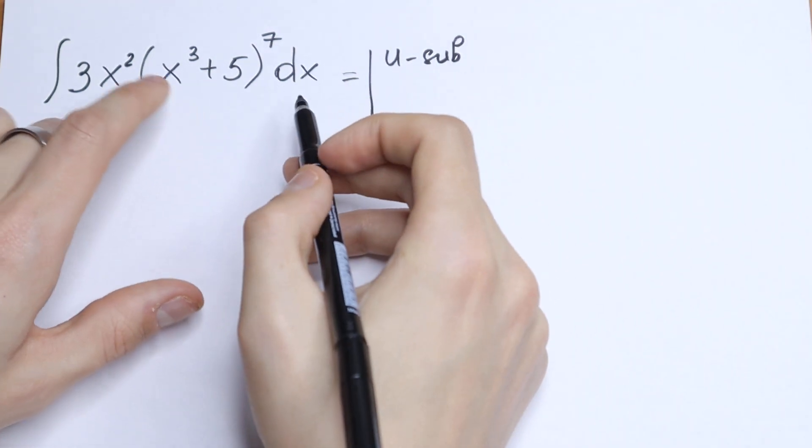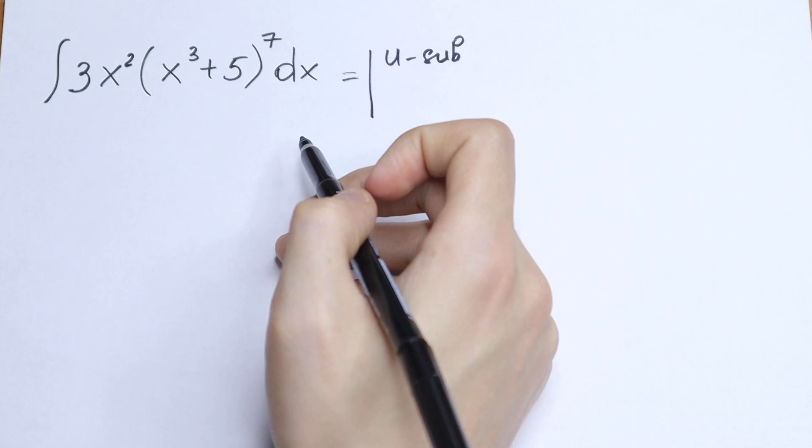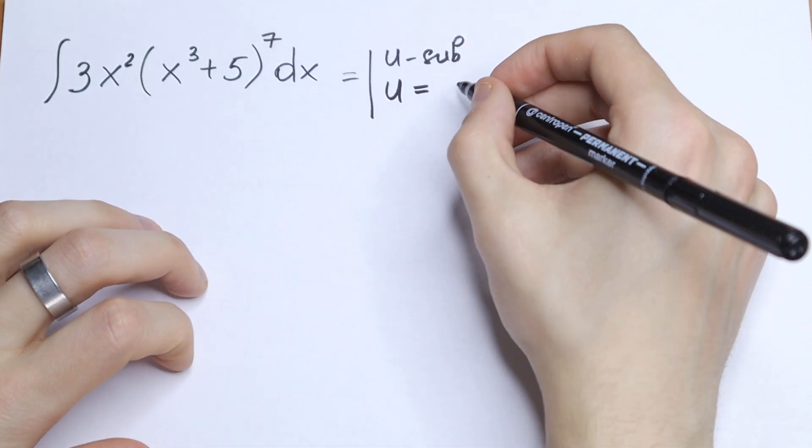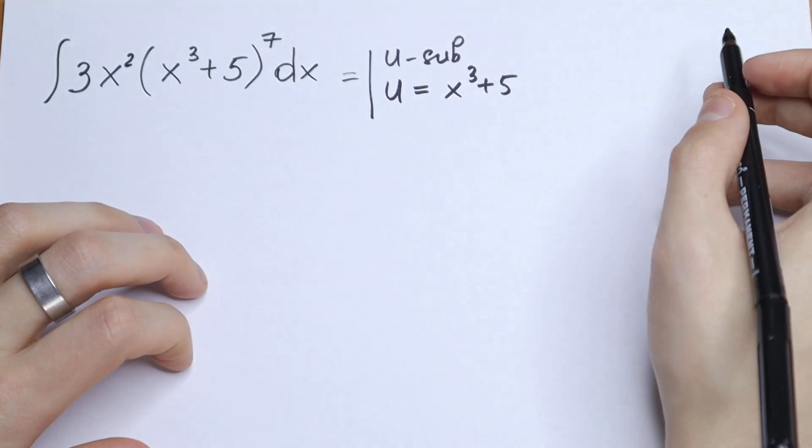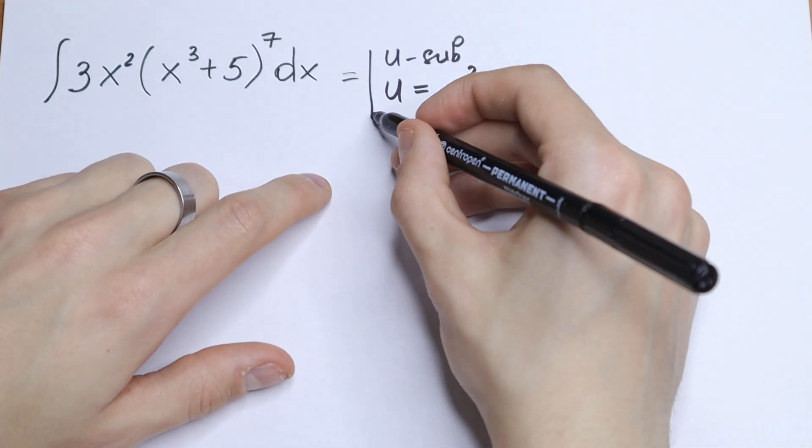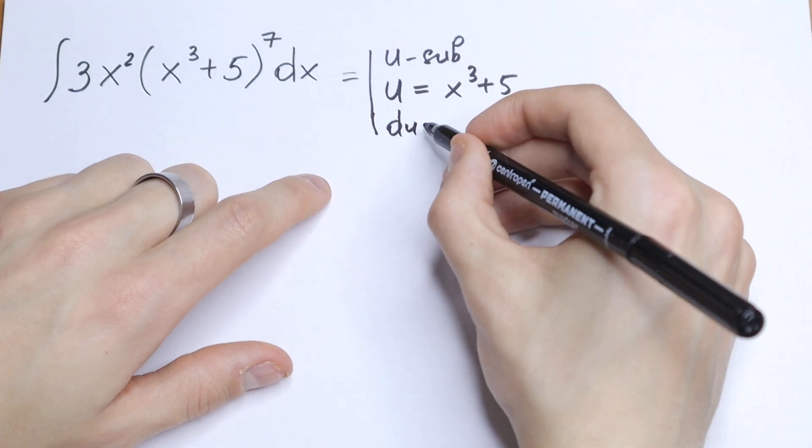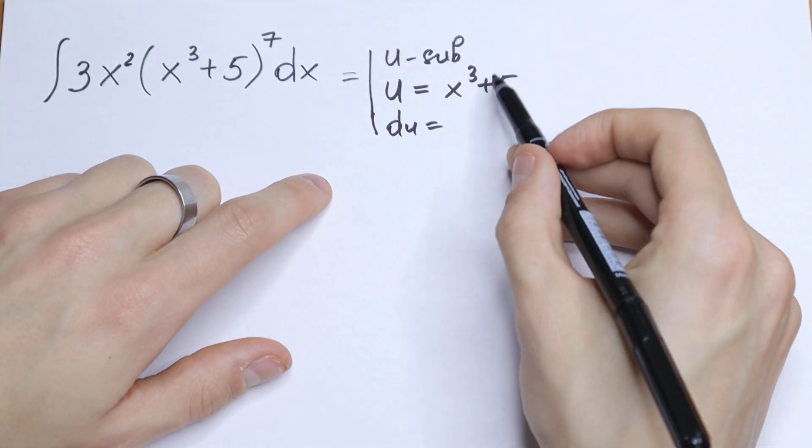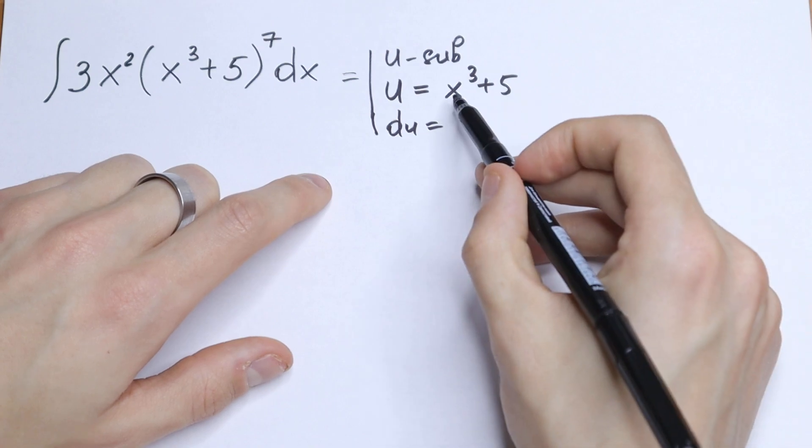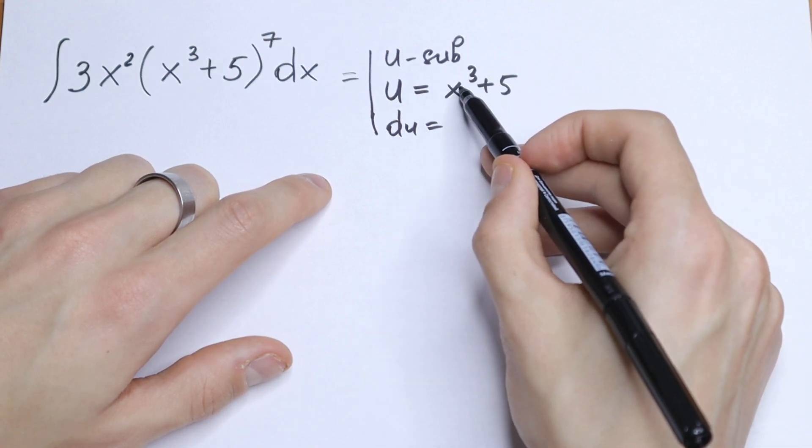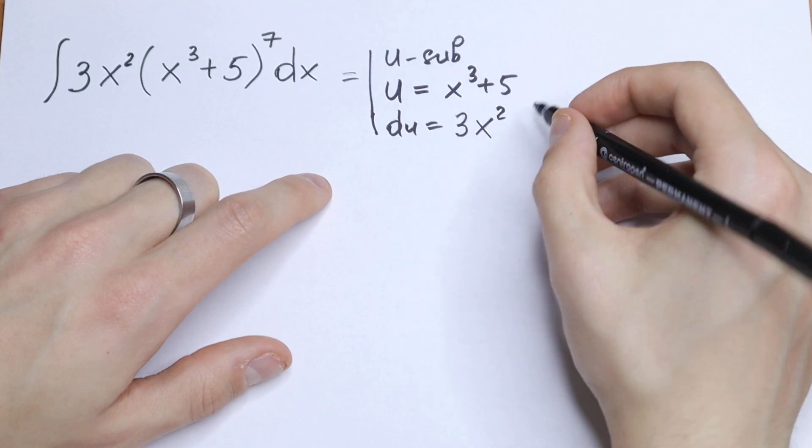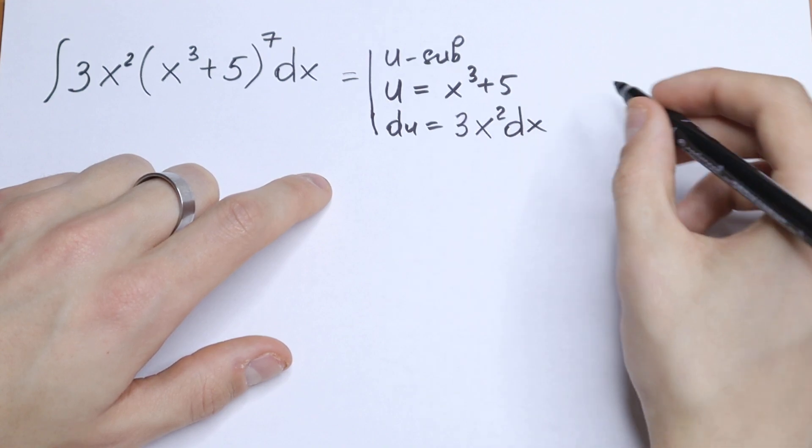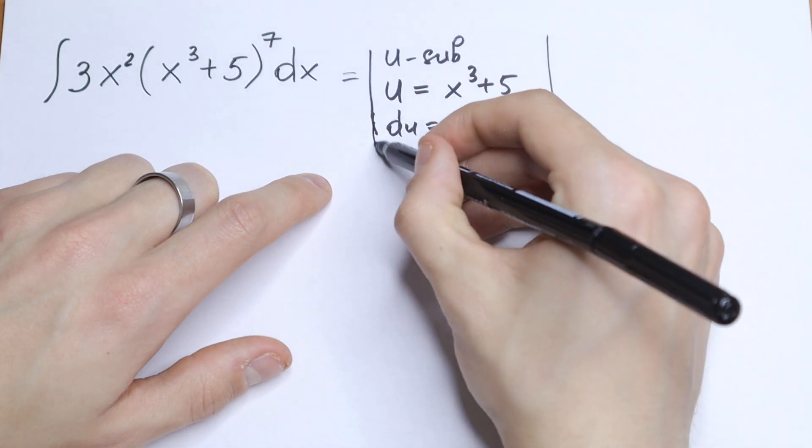This x cubed plus 5 will be our u. We will have that u equals x cubed plus 5. And of course we need to find our du. Let's find the derivative from this u. This will be equal to 0 if we are talking about the derivative. And this is a classic case. We will have 3x, 3 minus 1 will be 2, so 3x squared dx. This is our substitution.